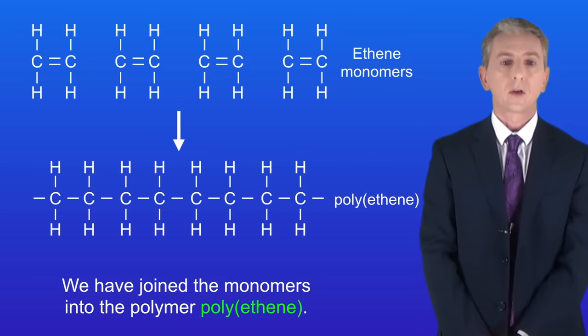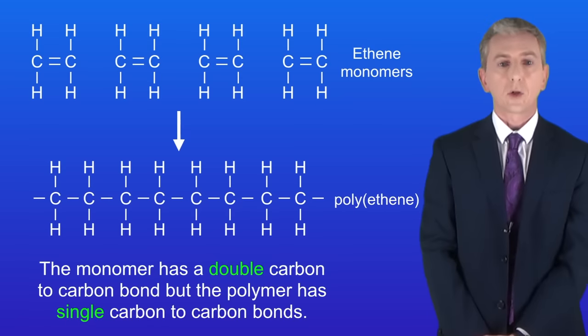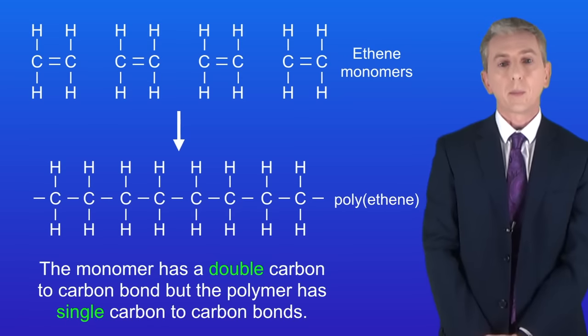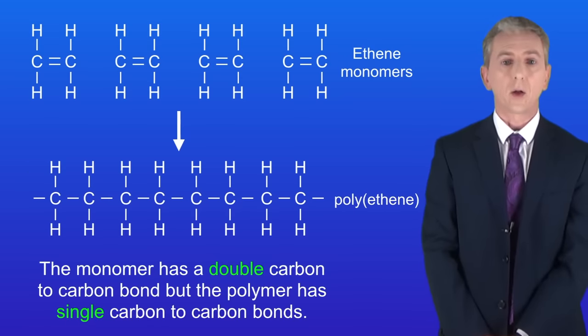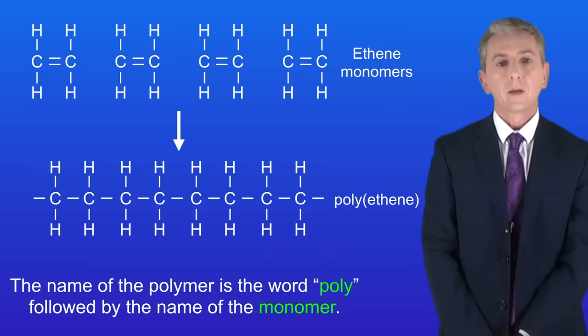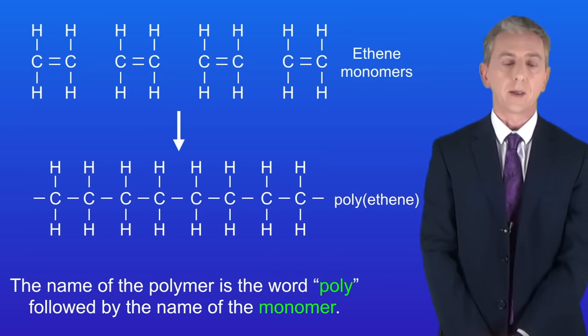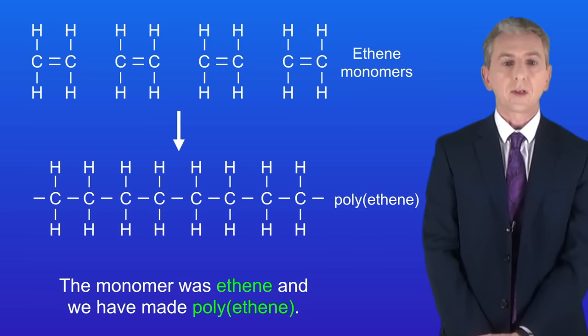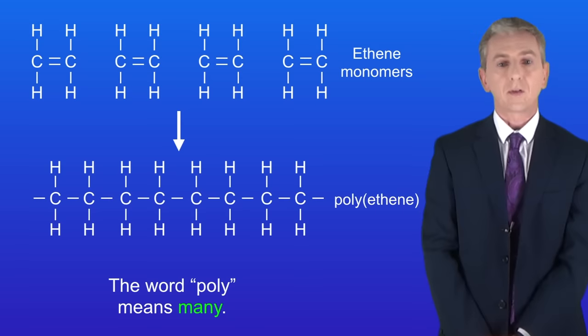Now there are a couple of points about this. Firstly, the monomer has a double carbon-to-carbon bond, but the polymer has single carbon-to-carbon bonds. Secondly, the name of the polymer is the word poly followed by the name of the monomer. So the monomer was ethene and we've made polyethene. The word poly simply means many.